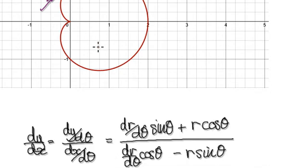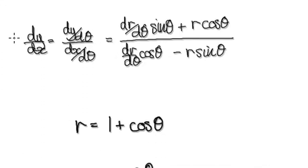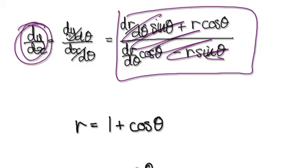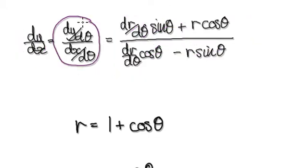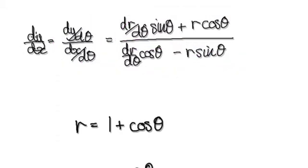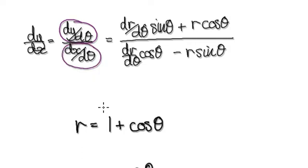In the previous video, we've seen that the gradient dy by dx is given by this formula. But don't try to memorize it directly. To find dy by dx, remember to find dy by dθ and then divide it by dx by dθ.